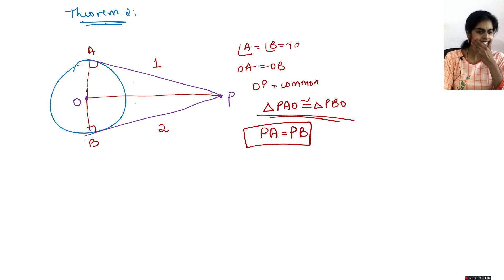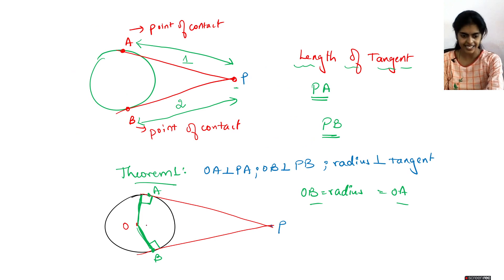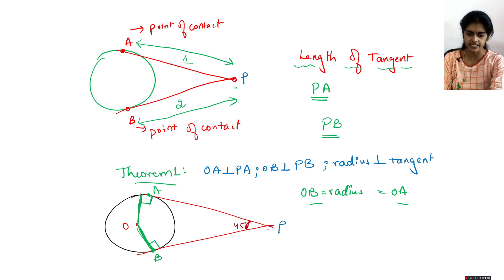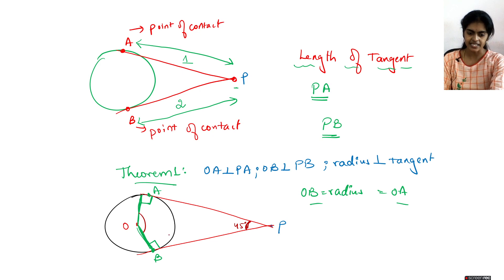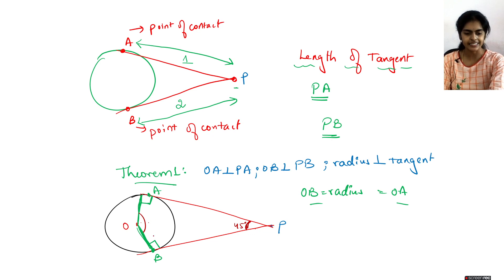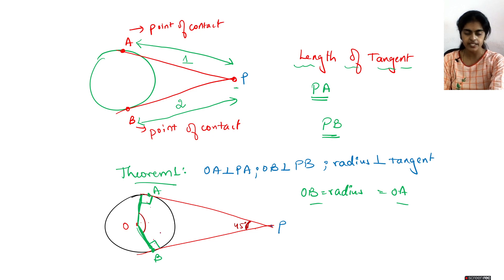Suppose this angle P is 45 degrees and you need to find angle O. OAPB is a quadrilateral, so the sum of angles is 360 degrees. Since angle A is 90, angle B is 90, and angle P is 45, you can evaluate angle O. As a shortcut: this forms a cyclic quadrilateral where opposite angles sum to 180, so angle O equals 180 minus 45.